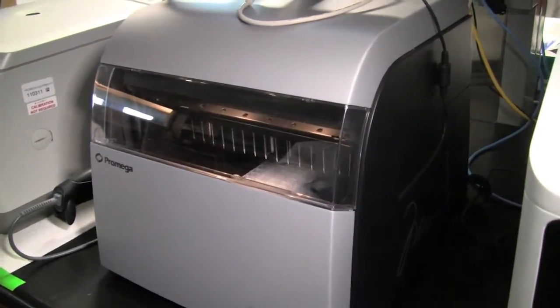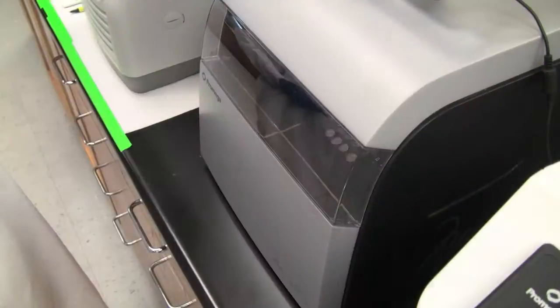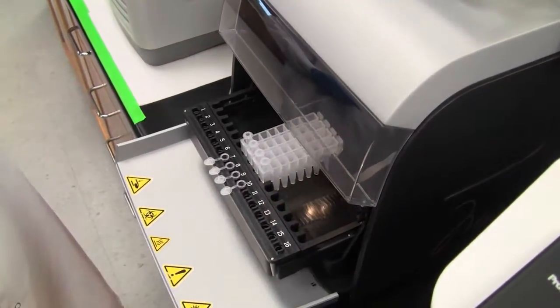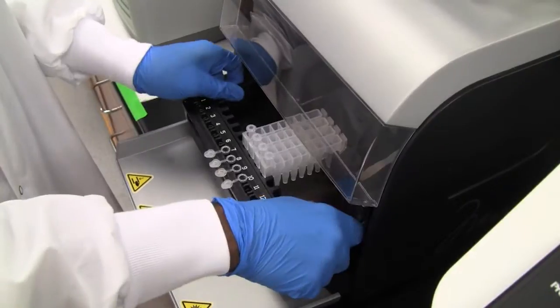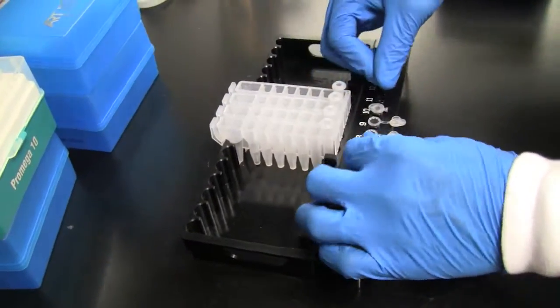When the run is complete, the screen will display a message that the method has ended. Follow the on-screen instructions to open the door. Remove the deck tray. Cap and remove the elution tubes.